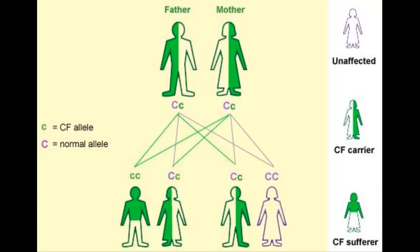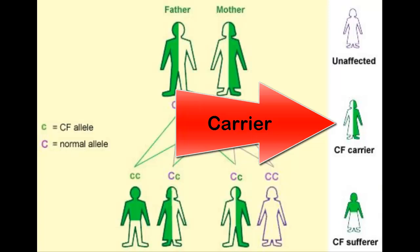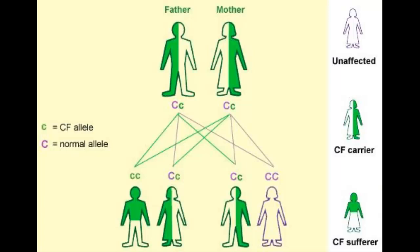There is a difference between CC and Cc: both do not have cystic fibrosis, but people with big C and little c are considered carriers. They can pass on that recessive allele to their offspring. So if two parents without cystic fibrosis are both carriers, they can both give that recessive allele to their child, giving the offspring a 25% chance of having this genetic disorder.